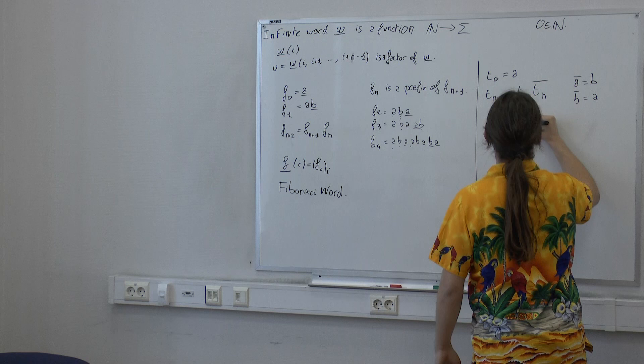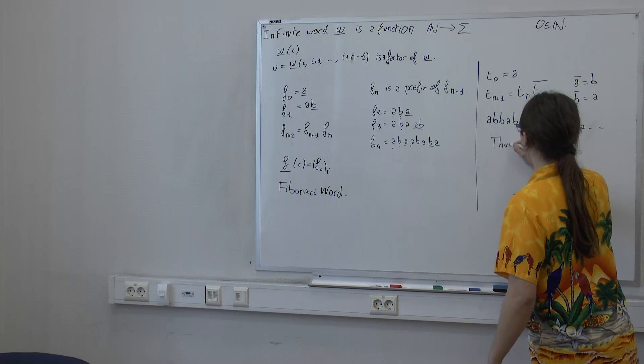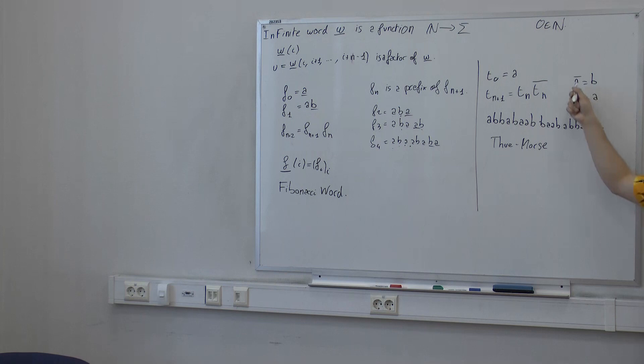This is called the Thue-Morse word. You could imagine generalizations where you do a rotation — like you have a, b, and c, where a becomes b, b becomes c, and c becomes a — but this two-letter version is the most used one for various reasons.